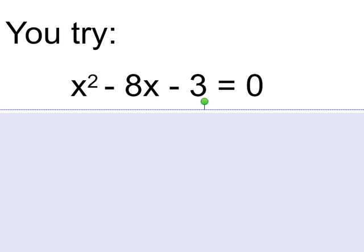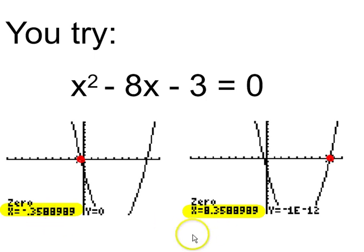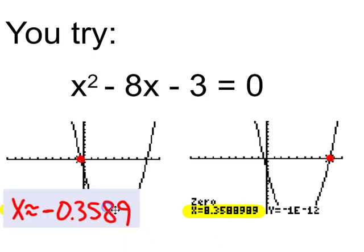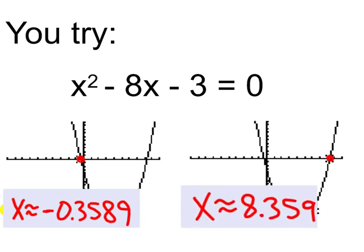Here are the answers. You should have gotten two x-intercepts — two zeros — one close to the origin and one a little further away. Those are the two solutions you should have gotten from your graphing calculator. Thank you.